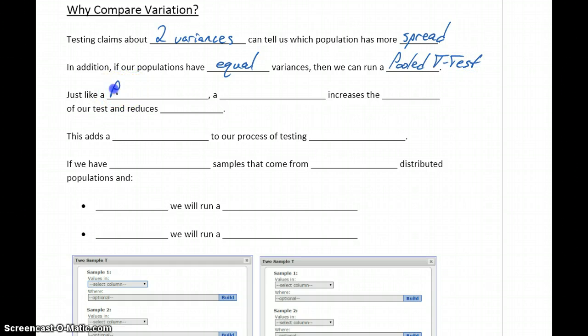Just like the paired t-test, the pooled test increases the power of our test and reduces beta, which is the probability of a type 2 error occurring.